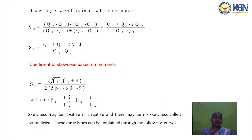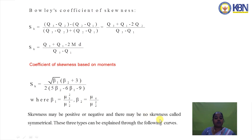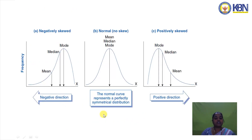Bowley's coefficient of skewness is Sk = (Q3 + Q1 − 2 median) / (Q3 − Q1). If only moments are available, the coefficient of skewness is Sk = √β1 × (β2 + 3) / [2(5β2 − 6β1 − 9)], where β1 = μ3² / μ2³ and β2 = μ4 / μ2². Skewness may be positive, negative, or zero (symmetrical distribution).